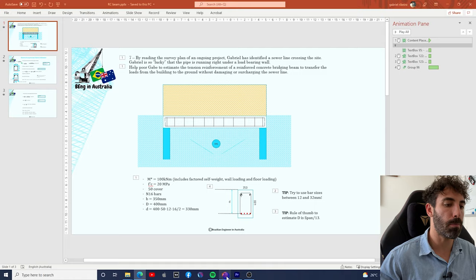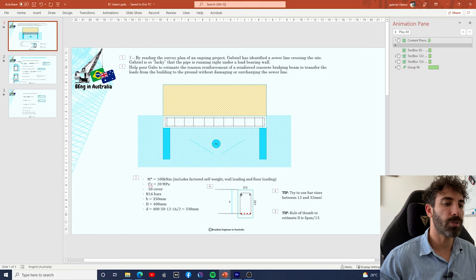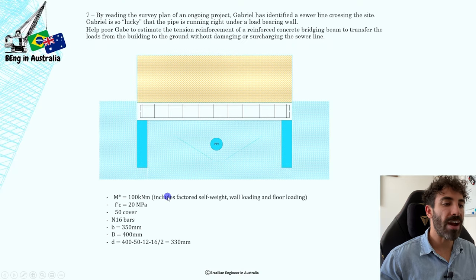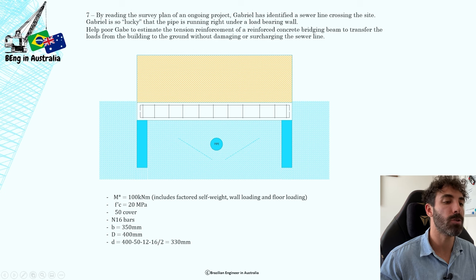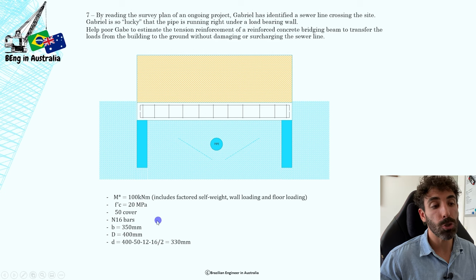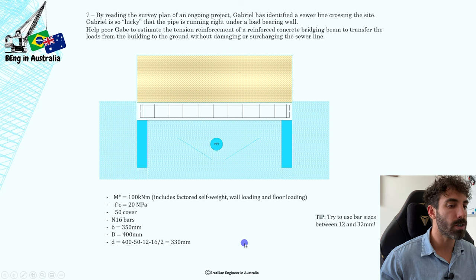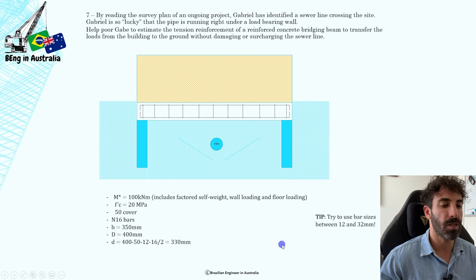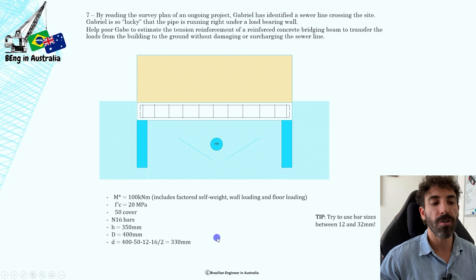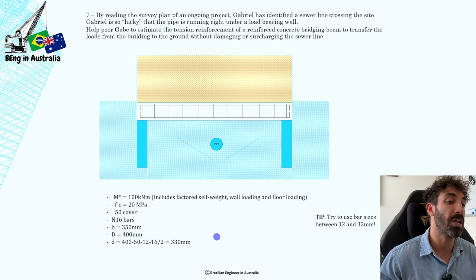Back to the concrete beam. We know the factored bending moment that we need to design the beam for, which is 100 kilonewton meters. We're going to use 20 MPa concrete, 50 millimeters cover. I will try N16 bars at first, see if that works. I would suggest using bars between 12 and 32 millimeters. If you go over 32, the bars start to get really heavy and you will need big blokes to carry them.